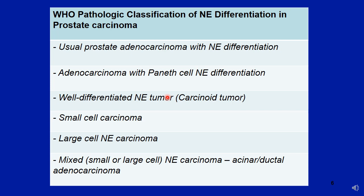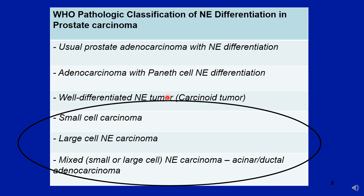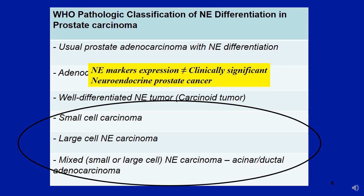The clinically significant neuroendocrine prostate cancers are small cell carcinoma, large cell carcinoma, the most common being mixed small or large cell neuroendocrine carcinoma, and intraductal adenocarcinoma. A very important point to keep in mind: neuroendocrine marker expression does not equate to clinically significant neuroendocrine prostate cancer.